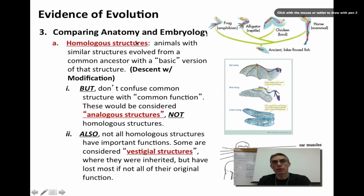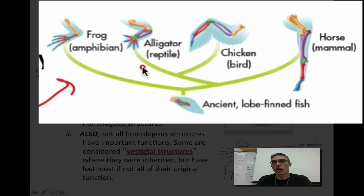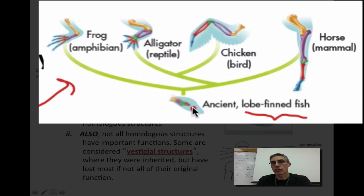A third piece of evidence is comparing anatomy and embryology, starting with anatomy. When we talk about anatomy, we discuss homologous structures — the prefix 'homo' meaning same. Animals with similar structures have evolved from a common ancestor that had a basic version of that structure, often referred to as descent with modification. Here we have five organisms: a frog, an alligator, a chicken, a horse, and an ancient lobe-finned fish, which is considered the common ancestor. A lobe-finned fish has a fleshy type of fin.